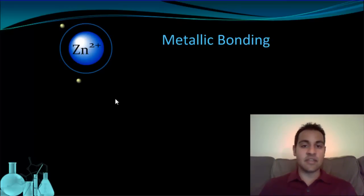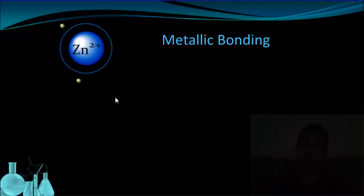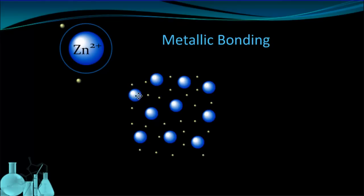If we looked at an entire sample of zinc, we would see something that looks like this. A whole bunch of zinc 2+ ions, these big blue spheres, surrounded by electrons. What we call the sea of electrons.